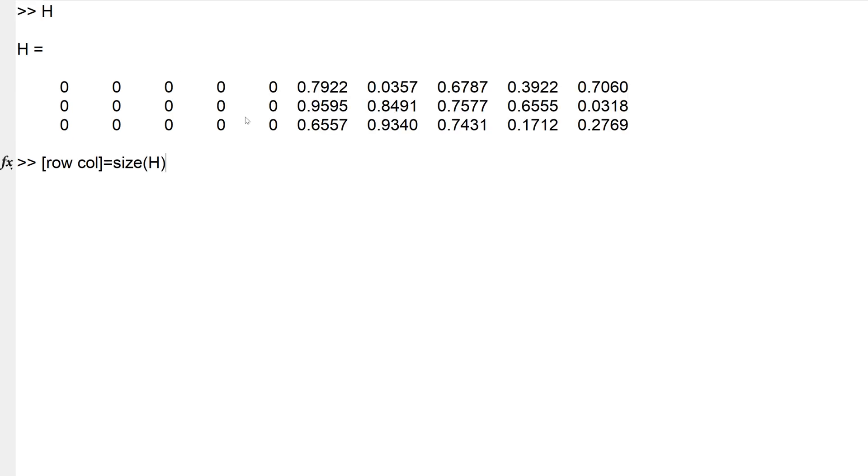You can check the size of matrix using size function. There are two outputs from the size function. One for row size and the other for column size. To save two outputs, I use row and column. Let's check the size of matrix H. Matrix H is a 3 by 10 matrix. You often need the larger dimension only between row and column and you can use length function, which is 10.